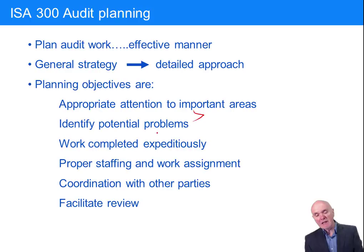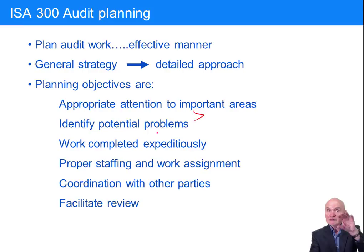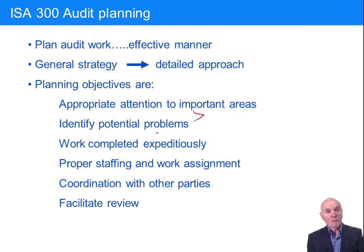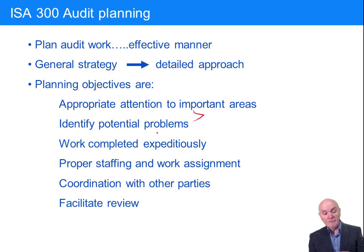Third planning objective: work completed expeditiously — meaning quickly and effectively. If a client has one office in London and a warehouse in Edinburgh, about 500 kilometres away, you want one visit to cover everything. You don't want to go up one week for receivables, another for payables, and another for inventory. You want to go up for two or three days and do the whole thing in one visit — that's common sense planning.